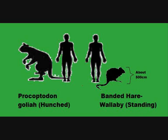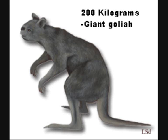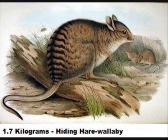Despite these similarities, the two animals bear some obvious differences. First, Procoptodon goliath was much larger and heavier than today's banded hare-wallaby. The goliath is predicted to have grown up to 3 metres tall and weighed up to 200 kilograms. In contrast, a banded hare-wallaby can only reach 0.8 metres tall and weighs 100 times less, averaging 1.7 kilograms. This was probably due to the fact that the goliath lived in a time when food was abundant. In contrast, the hare-wallaby's small size allows it to survive longer should a food shortage occur in today's harsher climate.